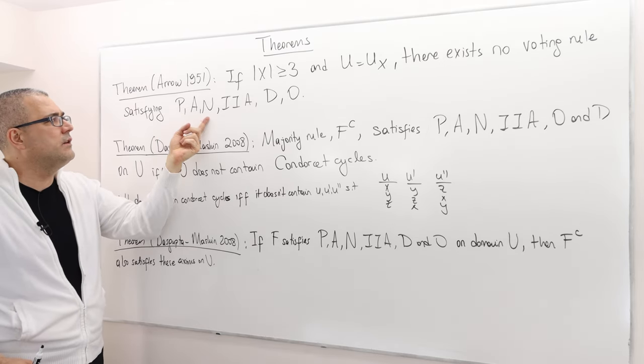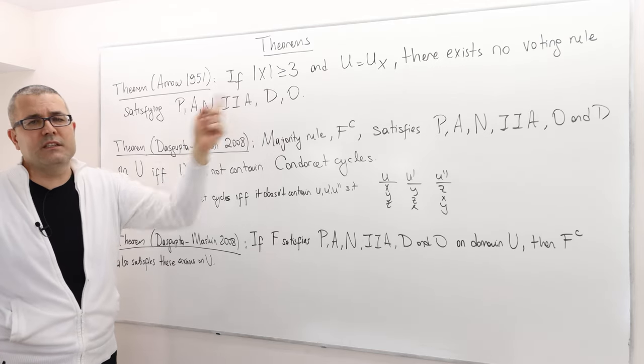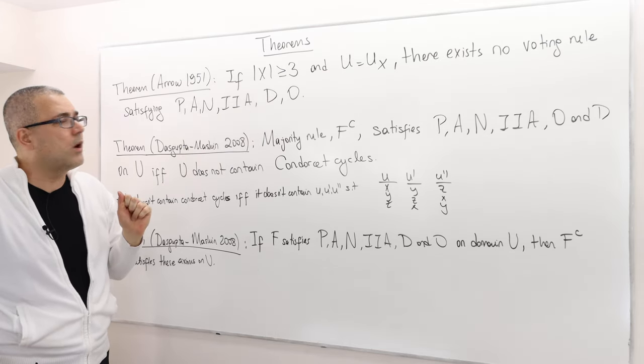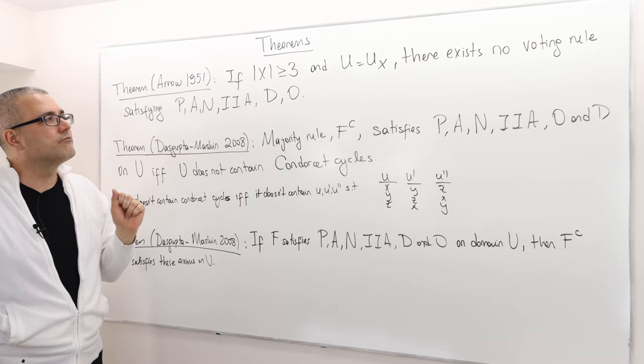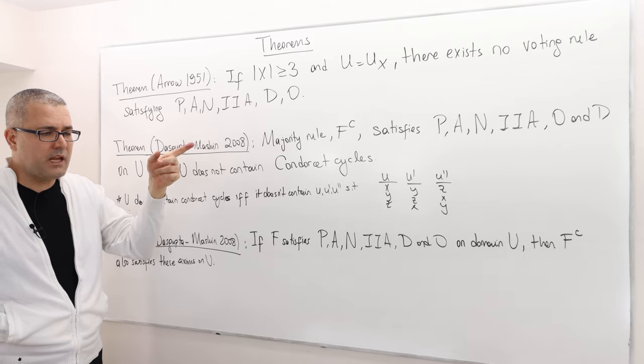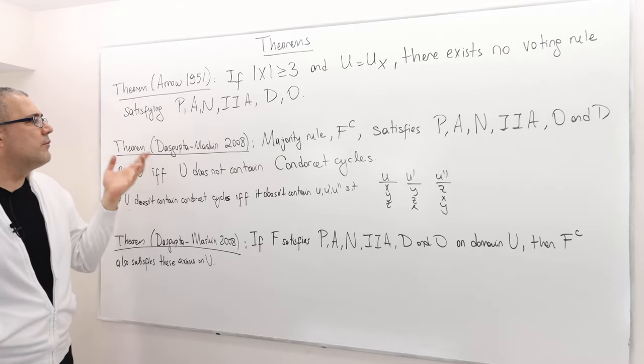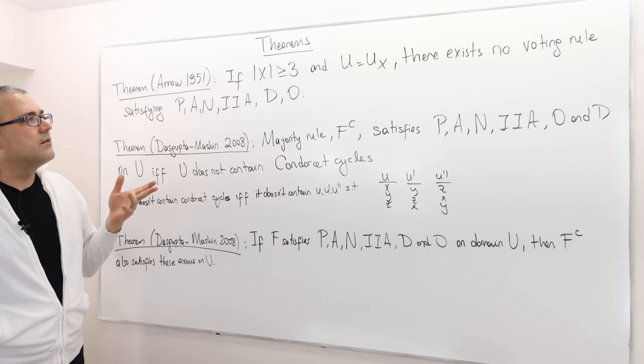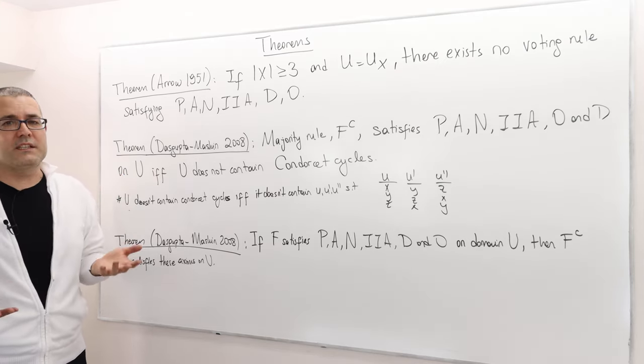Pareto principle, anonymity, neutrality, independence of irrelevant alternatives, decisiveness, and ordinality. So it's impossible to find a voting rule which satisfies all six axioms.